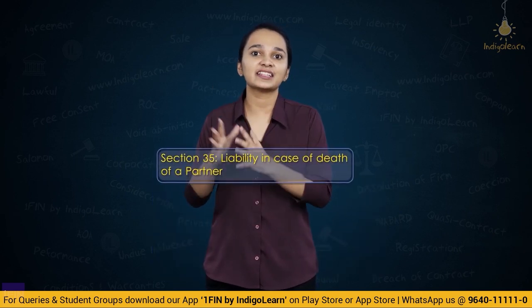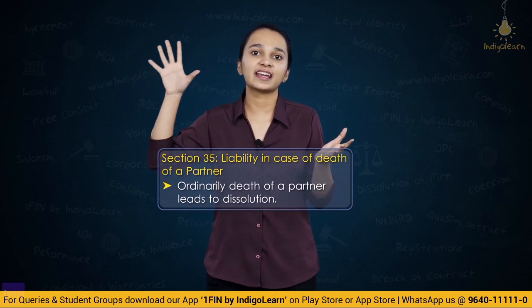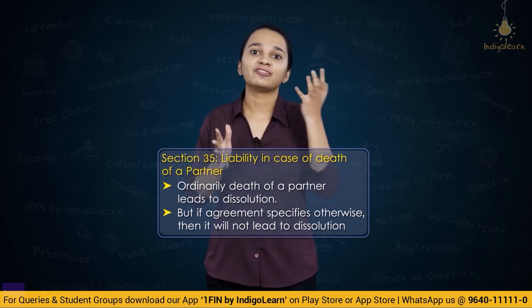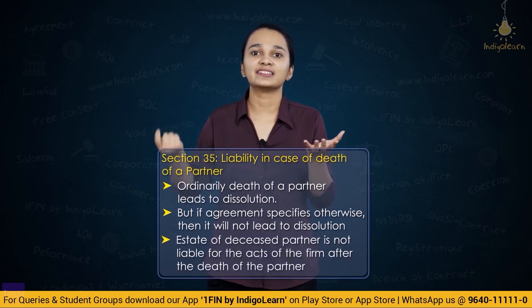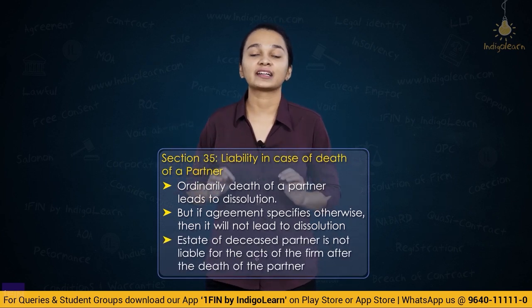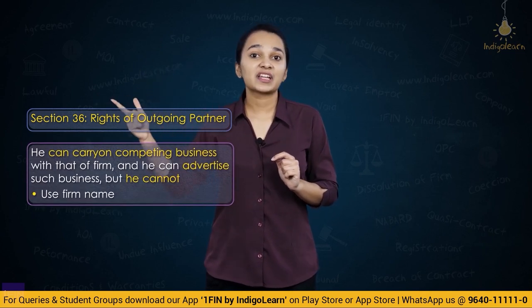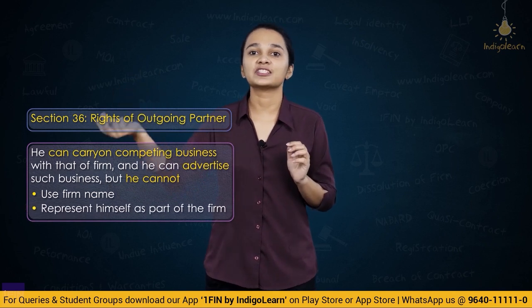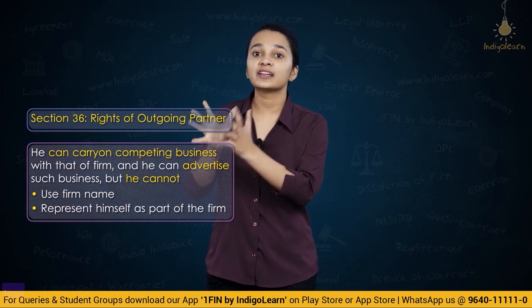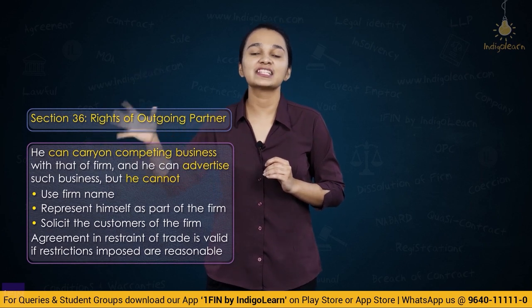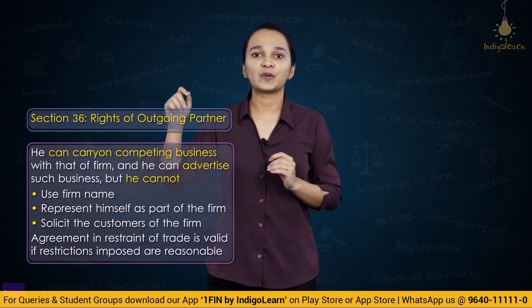Section 35 — on death of a partner, dissolution usually happens, but if there is an agreement stating death will not lead to dissolution, there will be none. Acts done after the death of a partner — the estate or legal representatives will not be liable for such acts. Section 36 — the right of an outgoing partner to carry on a competing business. He can do so but cannot use the firm's name, represent himself as acting on behalf of the firm, or solicit customers. There can also be an agreement in restraint of trade restricting the outgoing partner for a time or within specified local limits.